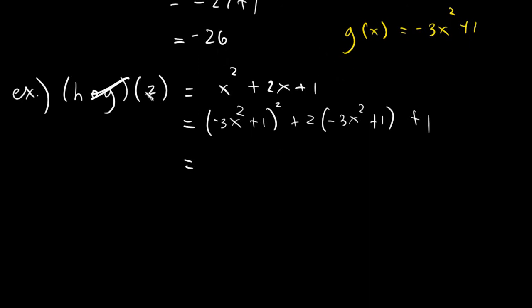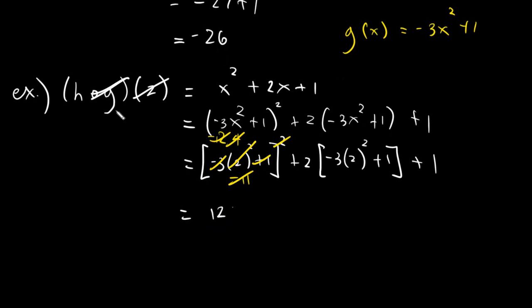Next, we're done with the g, we go with 2. So all x's will be replaced with 2. Plus 2 bracket negative 3 times 2 squared plus 1, and we have plus 1. And finally, it will give us 2 squared is 4, 4 times negative 3, the answer is negative 12. And negative 12 plus 1, the answer is negative 11. Negative 11 squared, it will give us 121.